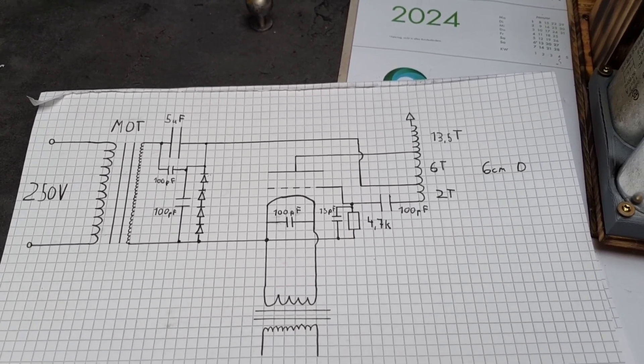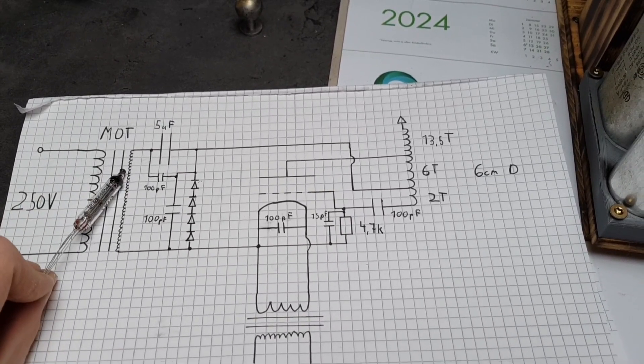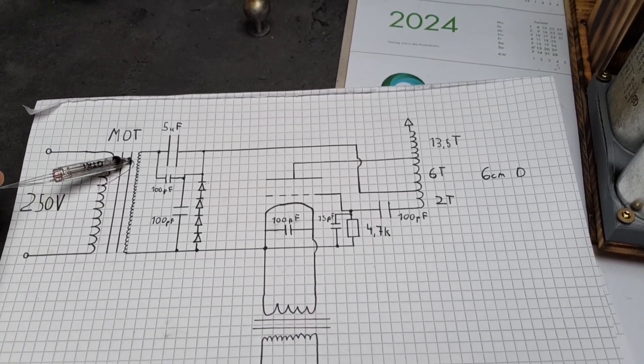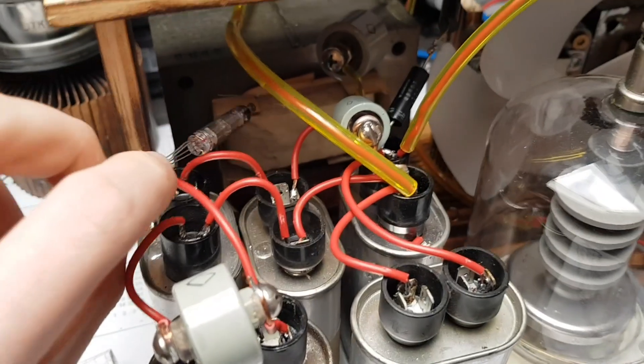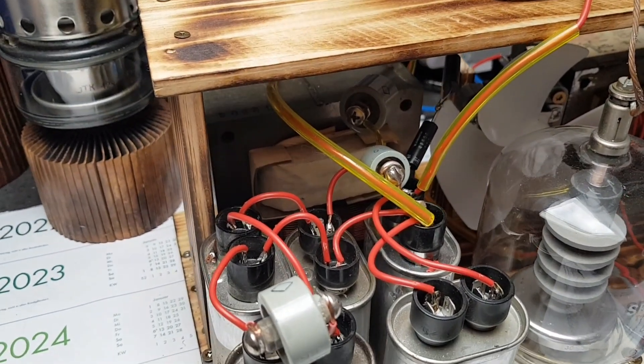So let's start right here. This is a simple voltage doubler, so we have a microwave oven transformer. Mine is pretty big, yeah it gives me a bit more, a bit of a bigger output.